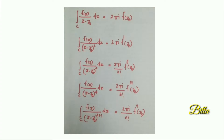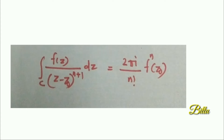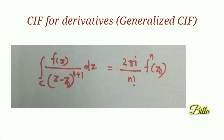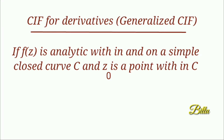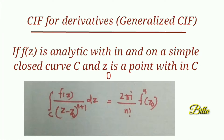In general, the integral over C of f(z) by (z minus z₀)^(n+1) dz equals 2πi divided by n factorial times f^(n)(z₀). This is known as Cauchy's Integral Formula for derivatives, and it is clearly a generalization of Cauchy's Integral Formula. The statement is: if f(z) is analytic within and on a simple closed curve C, and z₀ is a point within C, then the integral over C of f(z) by (z minus z₀)^(n+1) dz equals 2πi divided by n factorial times f^(n)(z₀), where f^(n)(z₀) means the nth derivative of f at z₀.